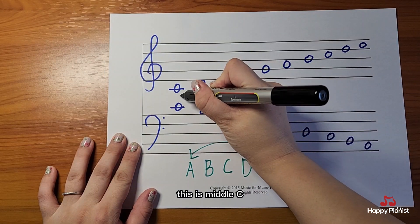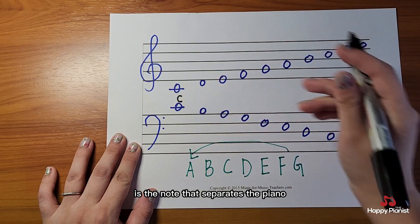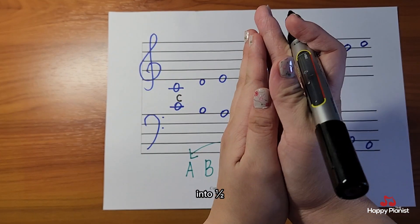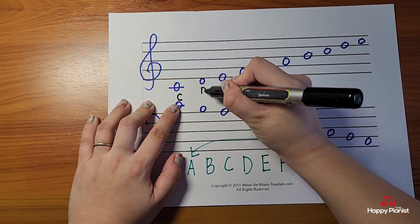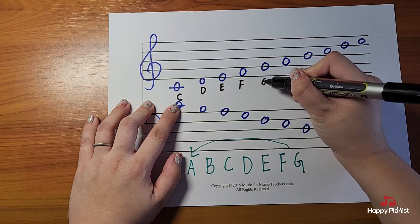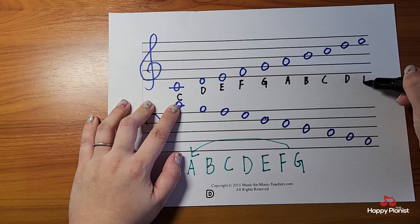This is middle C. Middle C is the note that separates the piano into half. After C, D, E, F, G, A, B, C, D, E.